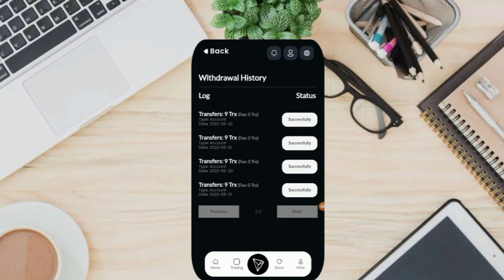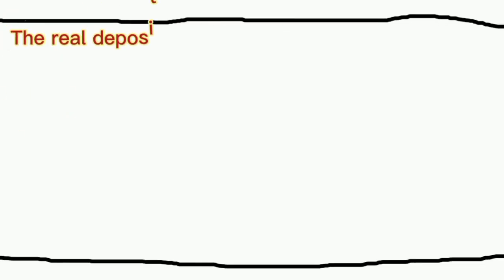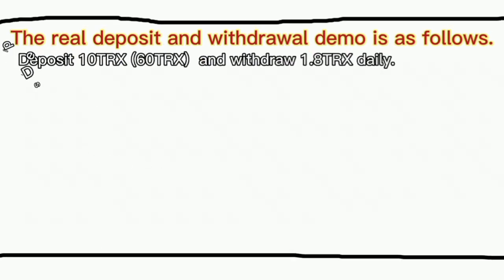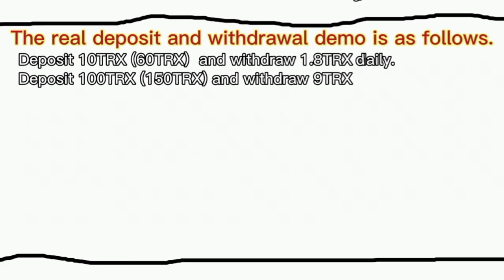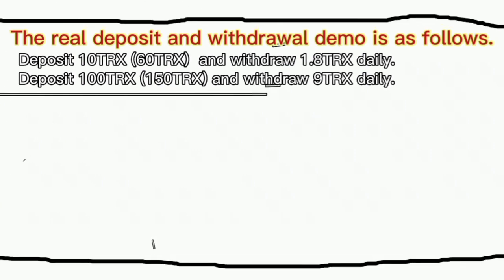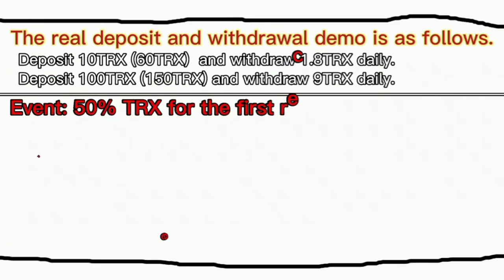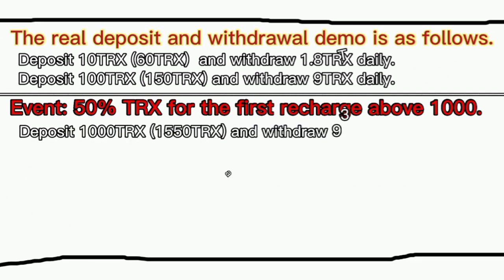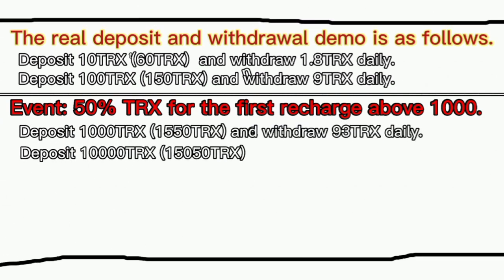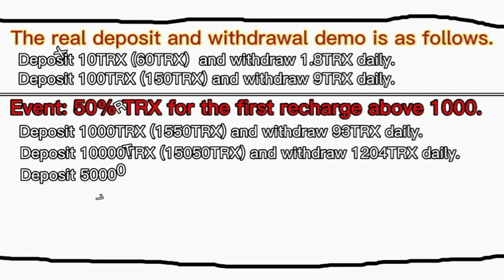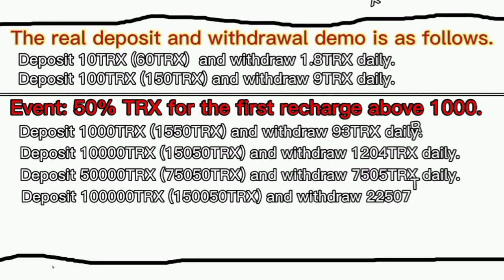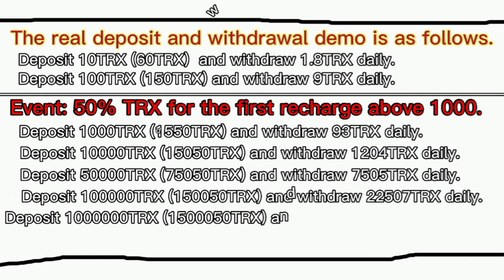This is real proof of my withdrawal. The real deposit and withdrawal demo is as follows: Deposit 10 TRX, get 60 TRX, and withdraw 1.8 TRX daily. Deposit 100 TRX, get 150 TRX, and withdraw 9 TRX daily. Event: 50% TRX bonus for the first recharge above 1,000. Deposit 1,000 TRX, get 1,550 TRX, and withdraw 93 TRX daily.